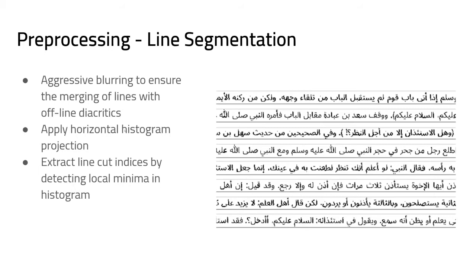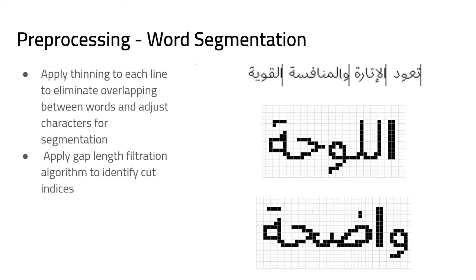We then performed line segmentation and word segmentation. Line segmentation was performed by blurring the entire line — the first horizontal row of pixels without any black pixels marked the separation between lines. The blurring was necessary because Arabic script has dots above and below words, and without blurring those dots would create unnecessary separations between the lines.